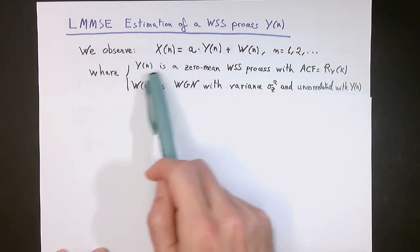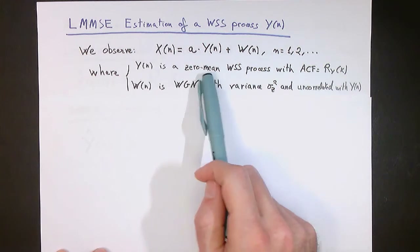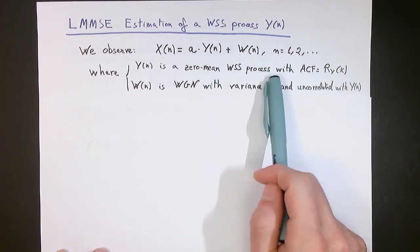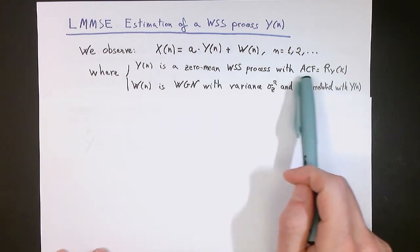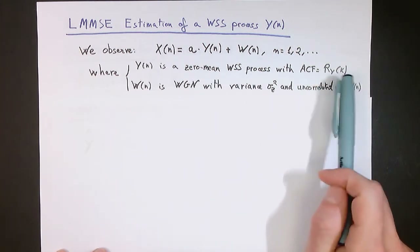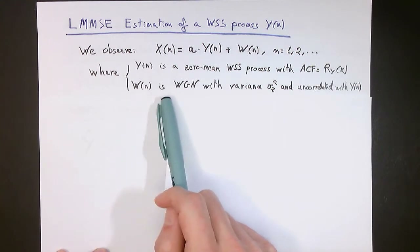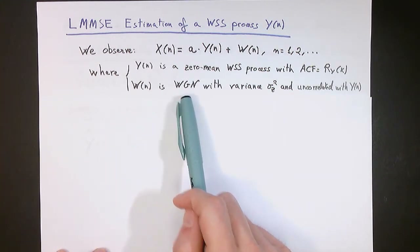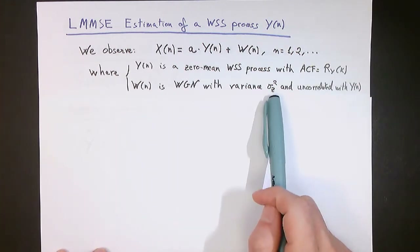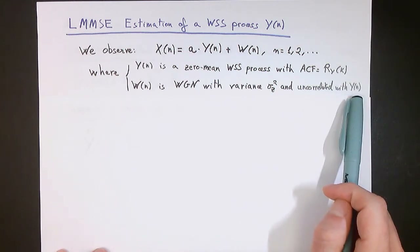y of n is a process of interest, which is a zero mean wide sense stationary process with an autocorrelation function r_y of k. And w of n is a wide Gaussian noise process which has a variance sigma_z squared, and in addition is uncorrelated with our process of interest y of n.